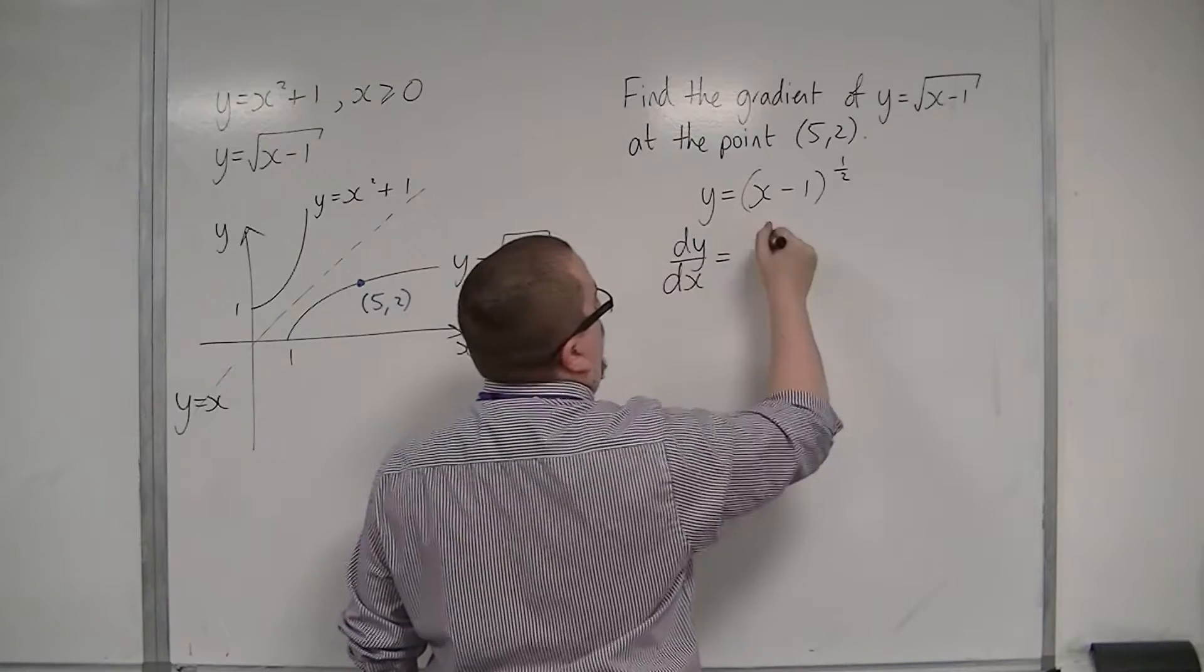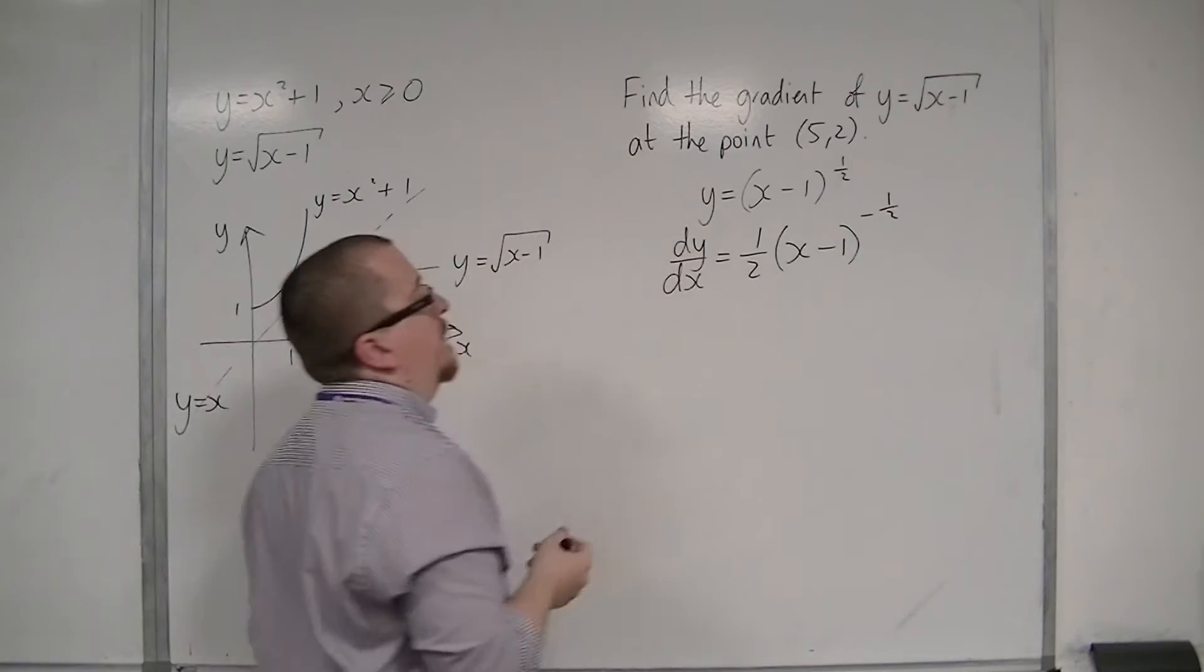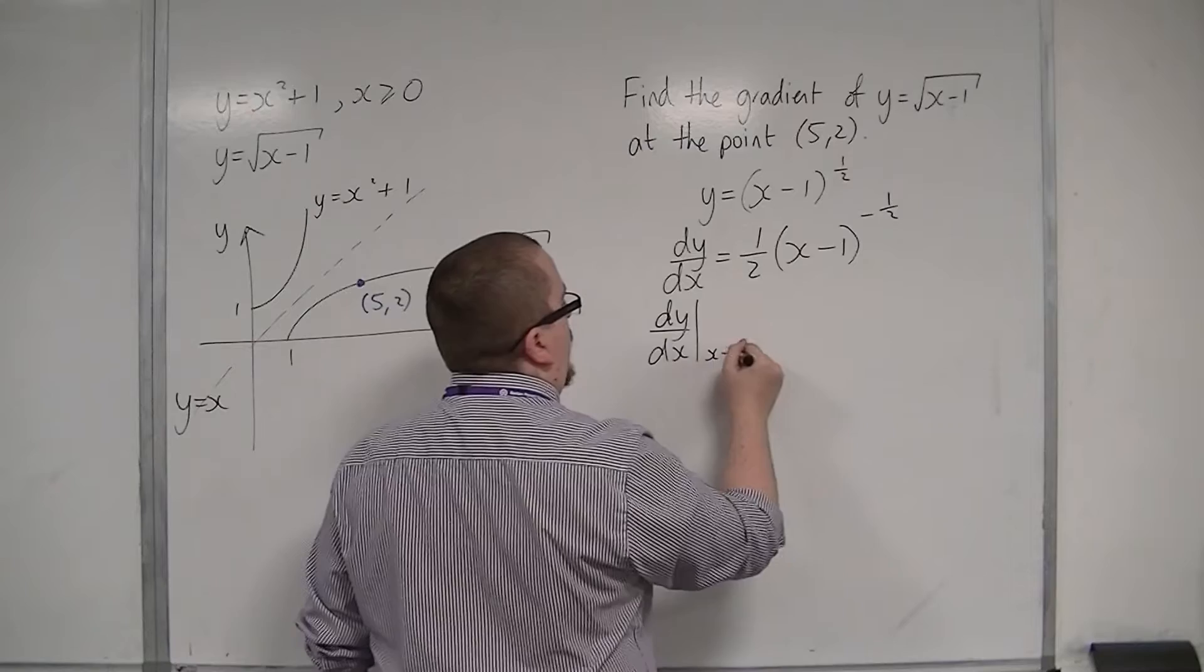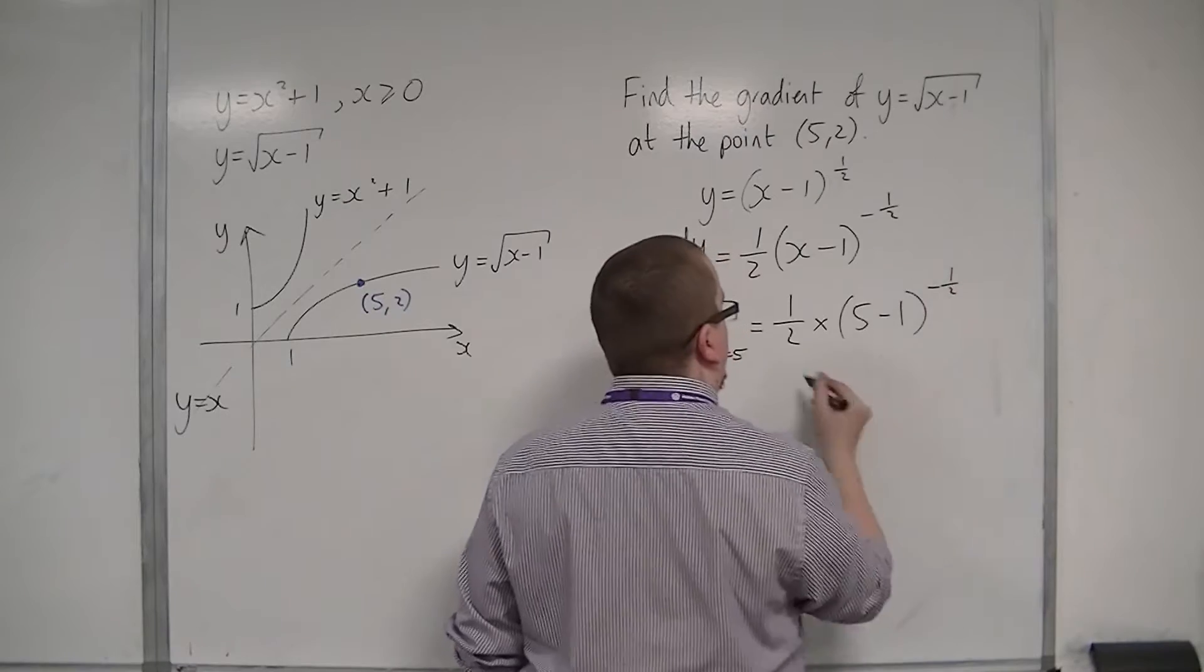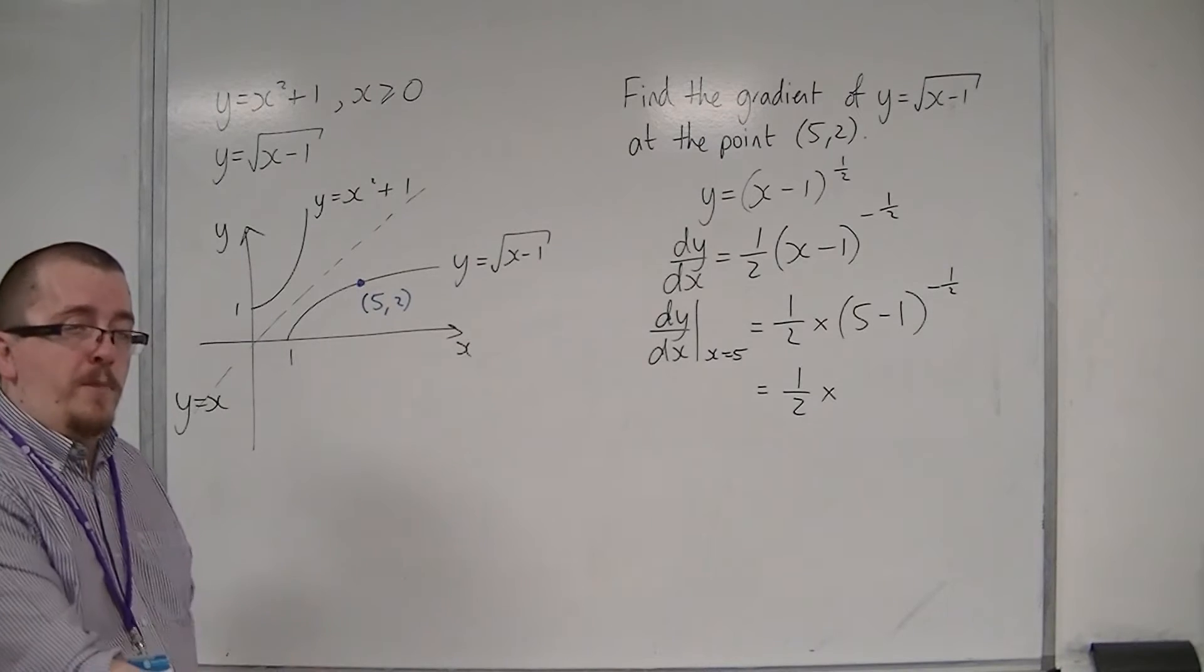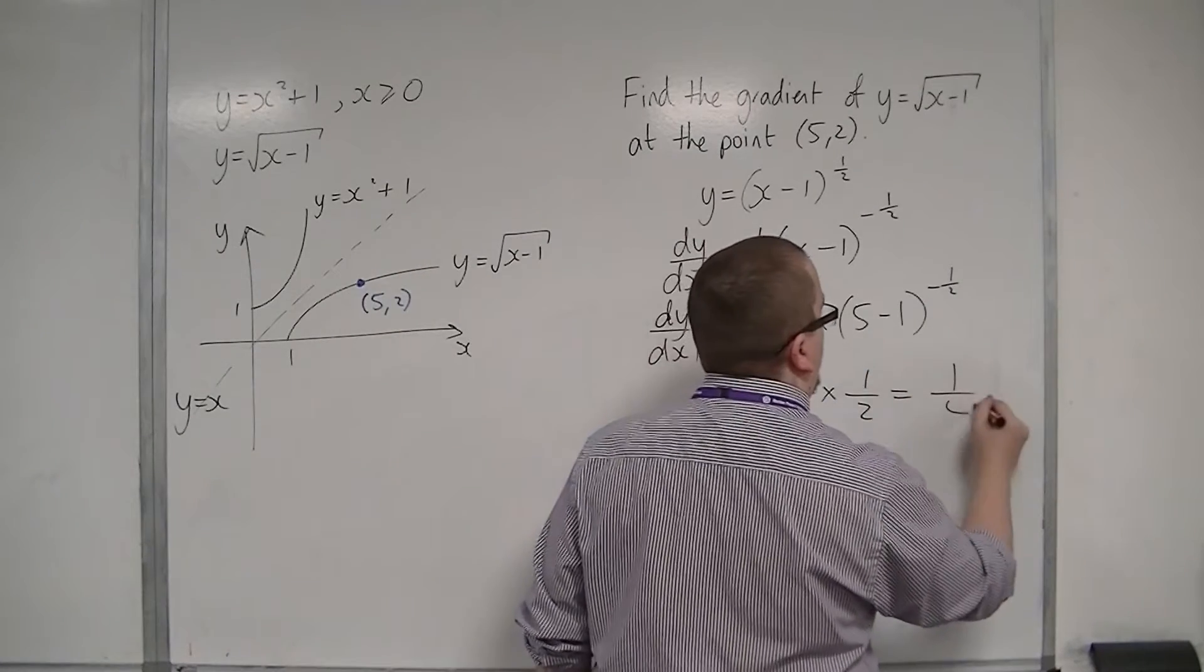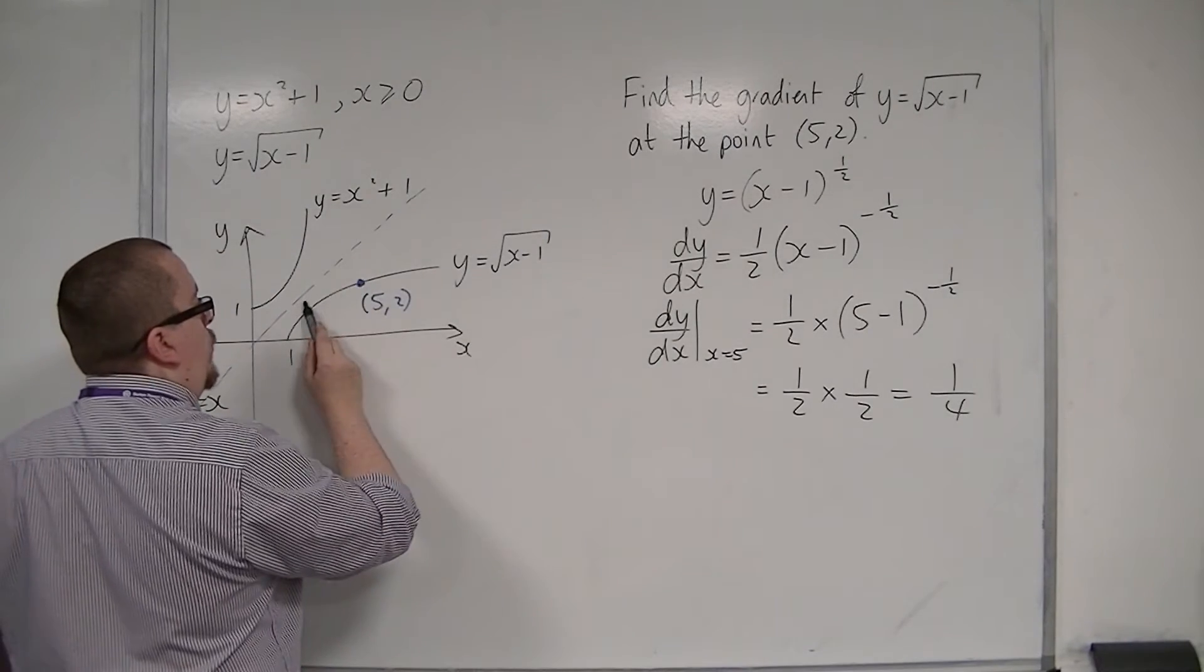So, dy/dx is 1/2 times (x minus 1) to the power of minus 1/2. And then if I'm going to substitute in the point 5, x is 5. So, dy/dx when x is 5 is equal to 1/2 times (5 minus 1) to the power of minus 1/2. Now, (5 minus 1) to the power of minus 1/2 is 4 to the power of minus 1/2, which is 1/4 to the power of 1/2, which is 1/2. So, we have 1/2 times 1/2, so 1/4. Okay? So, the gradient at this point is 1/4.